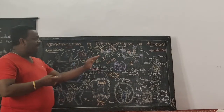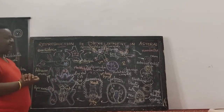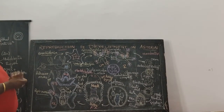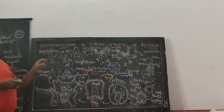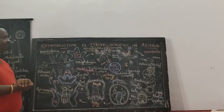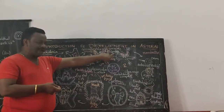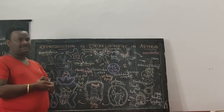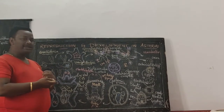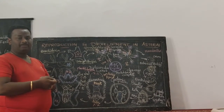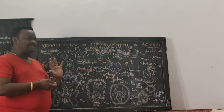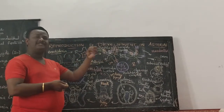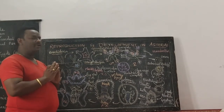The male and female organisms of Asterias have a reproductive system which is said to be very primitive, meaning they will have only the reproductive gonads. They don't have accessory organs, copulatory organs, or even organs for storing sperms. Because of the absence of all these accessory parts, we call the reproductive system of Asterias as very primitive.